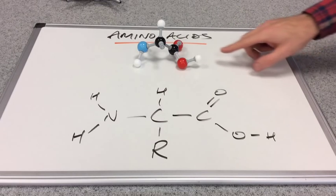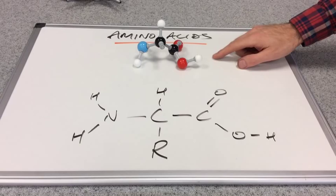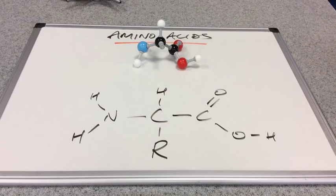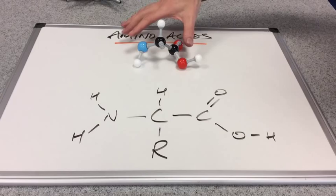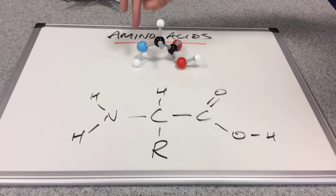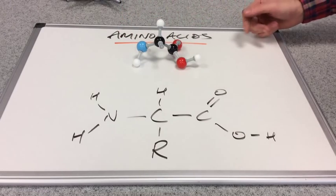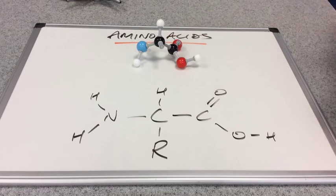Now, the type of amino acids that we need to study at A level are what we call alpha amino acids, and the reason for the alpha is because the two functional groups, the amino and the acid group, they are bonded to the same carbon, and that makes them alpha amino acids.